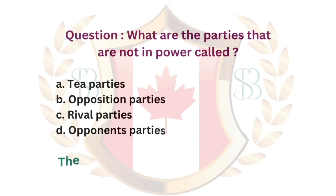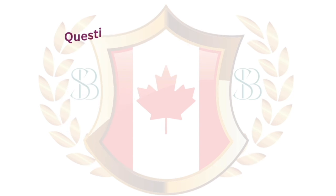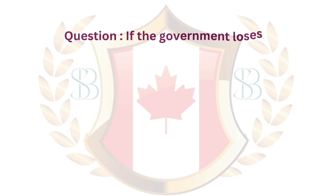Question. What are the parties that are not in power called? a. T parties. b. Opposition parties. c. Rival parties. d. Opponents parties. The answer is b. Opposition parties.